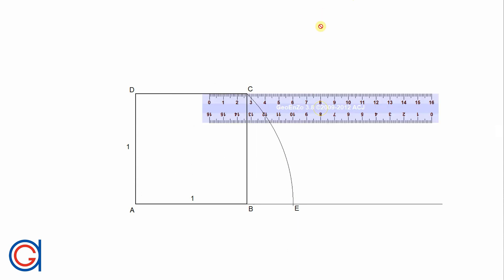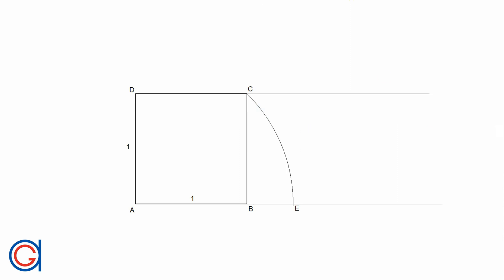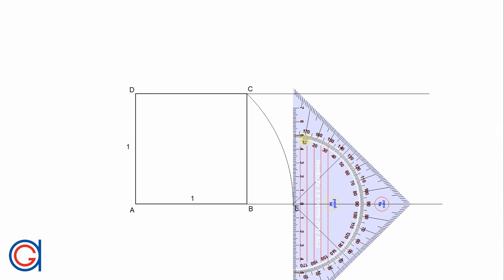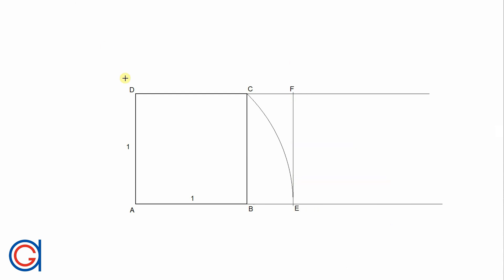Now we are going to elongate the top side of the square to the right also, as can be seen here on the screen. Now we are going to draw a perpendicular vertical line from point E, obtaining a new vertex F of the root 2 rectangle. And finally, we draw in a thicker line this root 2 rectangle: A to E, E to F, F to D, and back to A again.